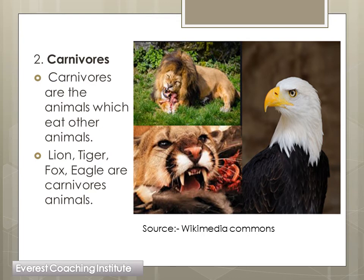Animals that eat only plant products are called herbivores, and animals that eat other animals are called carnivores. Carnivores are only flesh-eating. Examples like lion, tiger, eagle, fox - these are all carnivore animals which only eat flesh and other animals. So this is what you have to understand: only flesh-eating is carnivores, and only plant-eating is herbivores. This was our second category.